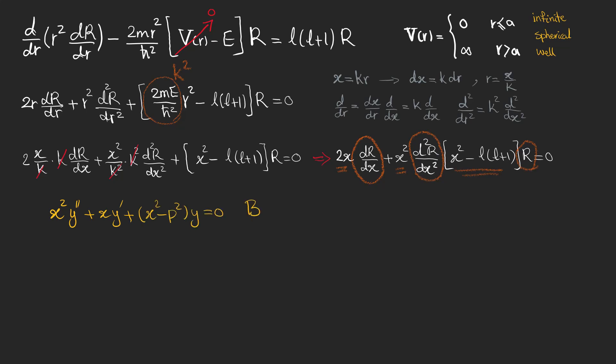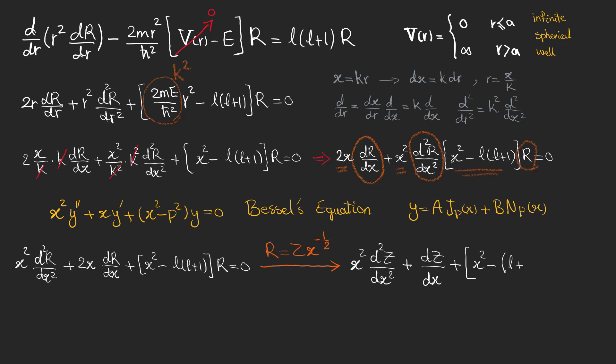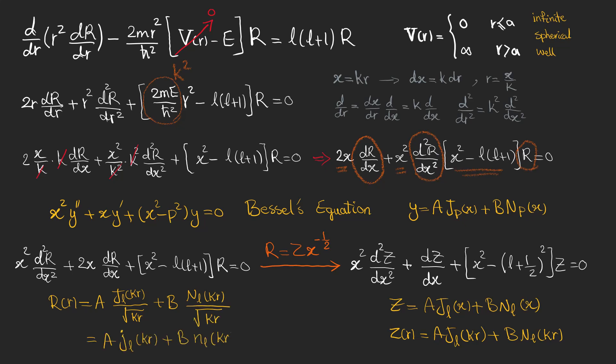There is a very well studied equation called the Bessel's equation in which the solutions J and N are derived using Frobenius method. We can change our last equation into the Bessel's equation by changing our function to Z times X to the power minus half. We can write down the answers to this equation in X and also in R. And the solutions of this equation, which is called the spherical Bessel's equation, are like this.